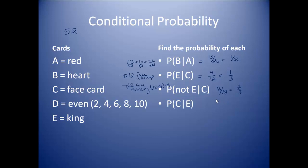Probability of C given E. This time I tell you I have drawn a king, and I want to know what's the probability of the card I've drawn being a face card. Well, there are 4 kings I'm picking from, and all 4 of them are face cards. So you have a 4 out of 4 chance, which is 1. It's guaranteed: if you have drawn a king, you have a face card.